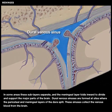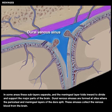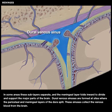Dural venous sinuses are formed at sites where the periosteal and meningeal layers of the dura split. These sinuses collect the venous blood from the brain.